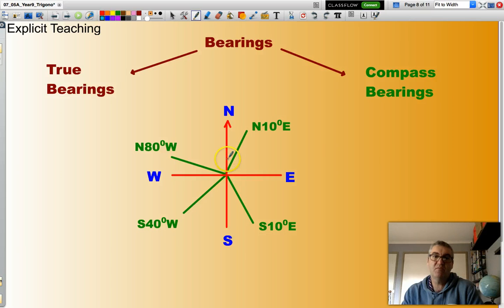The first true bearing is basically, what is that angle there? I've started at north, and I've headed 10 degrees east. So, my true bearing would be 010 T. In other words, that is 10 degrees. So, I started at north, and I've headed near.